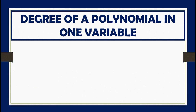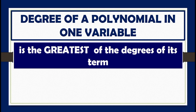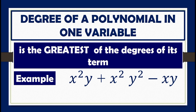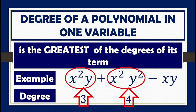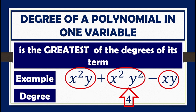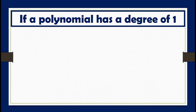For the degree of a polynomial in more than one variable, consider the example: x squared y plus x squared y squared minus xy. To determine the degree, add the exponents of the variables in every term. The sum of exponents of x squared y is 3; for x squared y squared, it is 4; and for xy, it is 2. Therefore, the degree of a polynomial is the greatest of the degrees of its terms. In this case, 4 is the degree of x squared y plus x squared y squared minus xy.